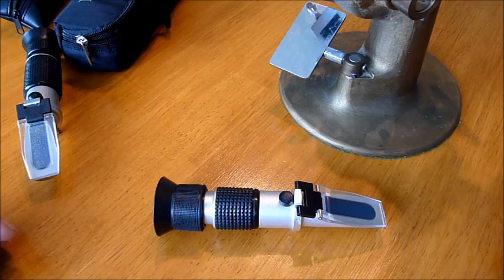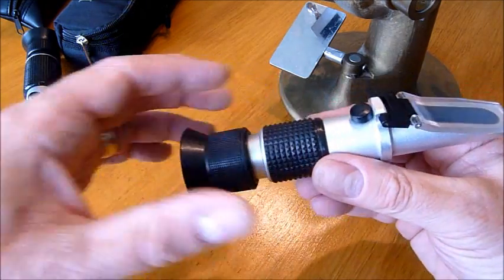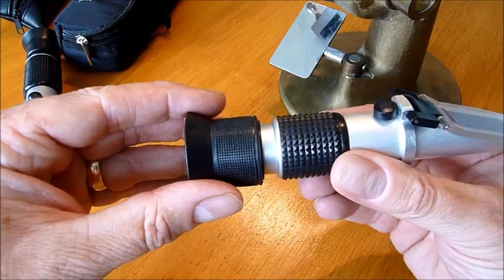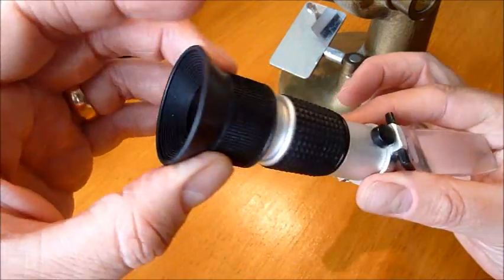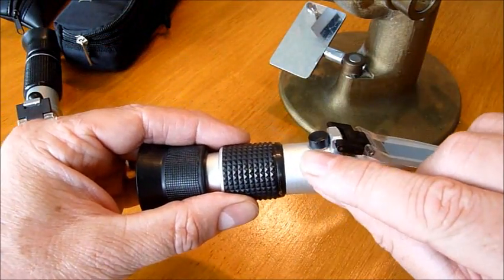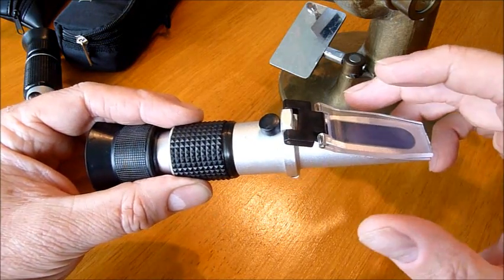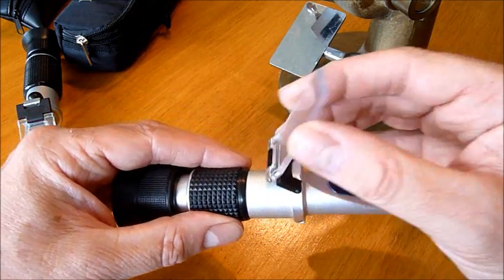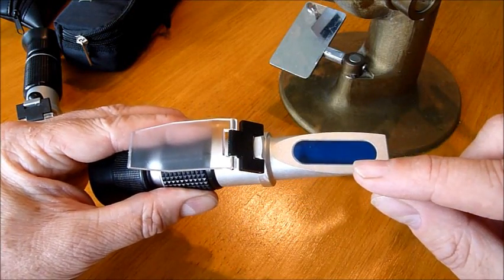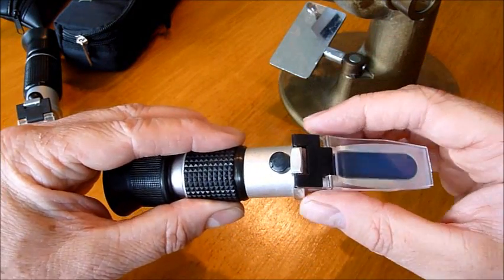Let's just refresh ourselves then. A honey refractometer. You have the eyepiece, we have the calibration screw that I'm not going to touch but we'll talk about that later. We have the prism where the sample goes and the prism cover.